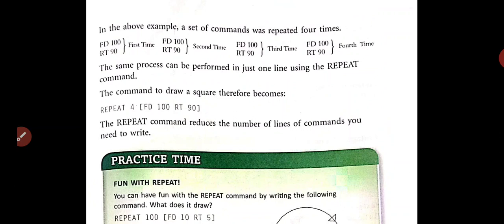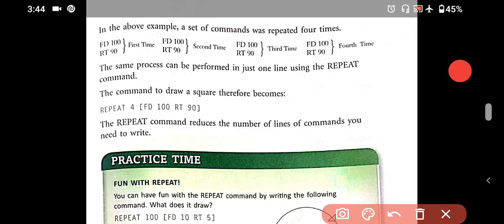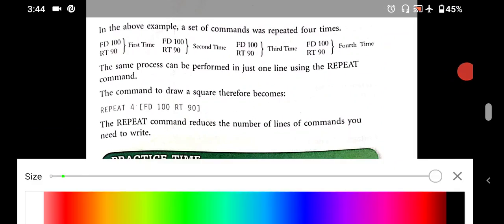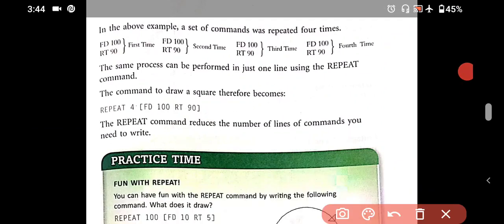Repeat, then space, four, space, then square bracket. This is square bracket. I will show you. FD, space, 100, space, rt, space, 90, and bracket over.